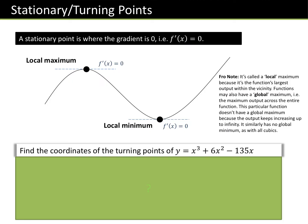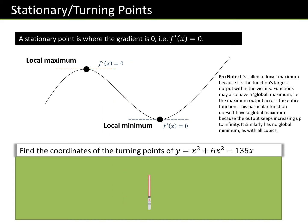So what we're going to be looking at is stationary points. When the gradient equals zero, we have a stationary point. This stationary point could either be a minimum or a maximum. In this topic we're looking at how to find out if they're a minimum, a maximum, or a point of inflection. To find the coordinates of turning points, we need to find the gradient function, put it equal to zero, solve for x, then substitute back into the original equation to find y.